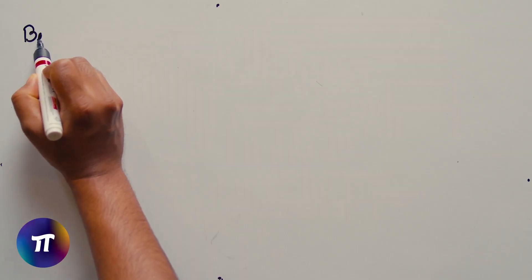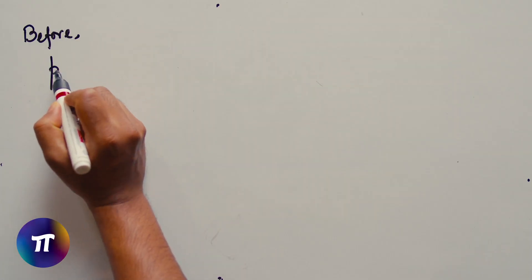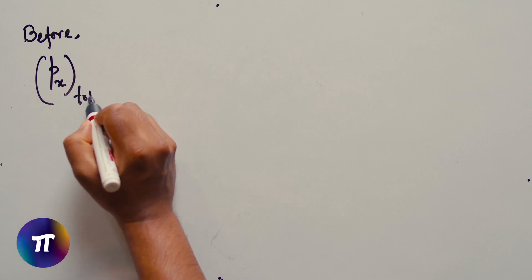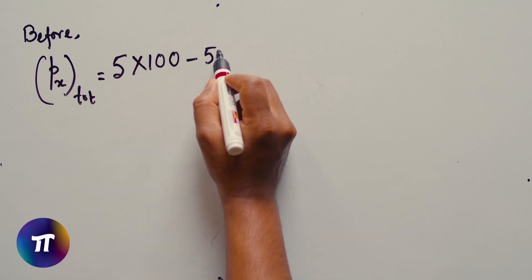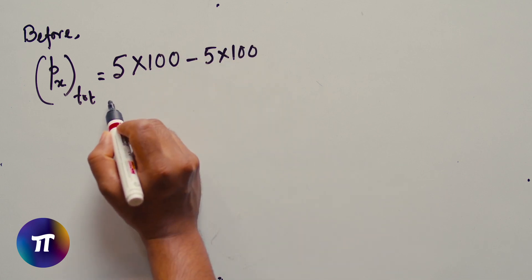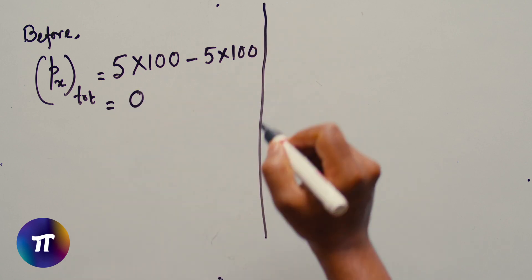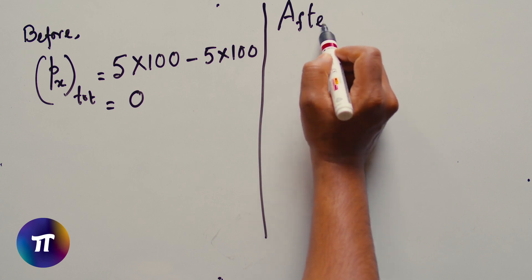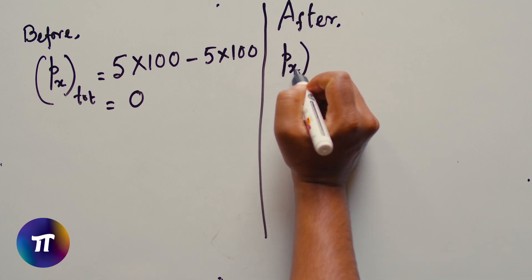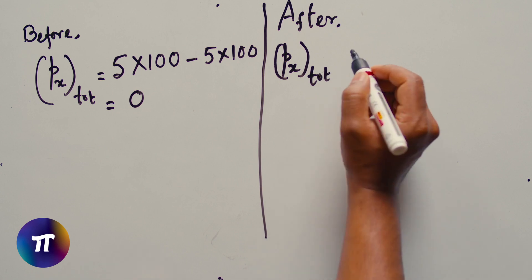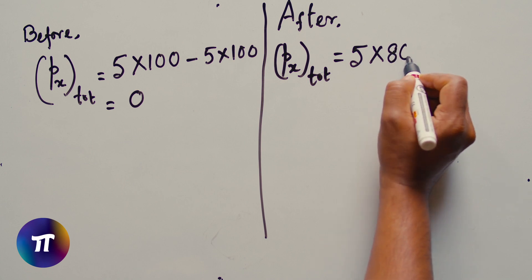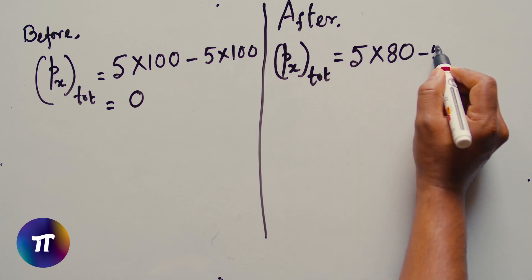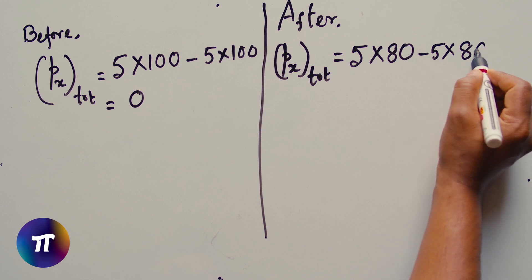So the net x momentum of two balls before collision is 5 times 100 minus 5 times 100 is equal to 0. The net x momentum after collision is px total is equal to 5 times 80 minus 5 times 80 is equal to 0.